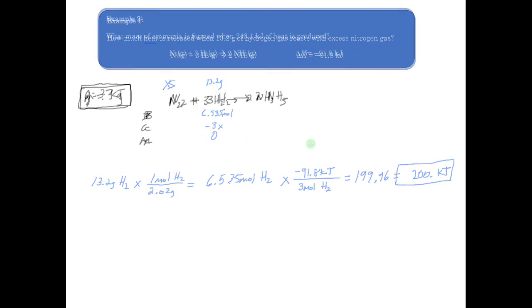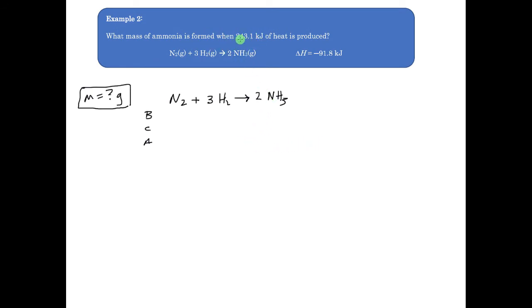In this second example we're doing something a little different. Here they're giving us the amount of heat produced and we're trying to figure out the mass. So this time I'm looking for mass in grams, starting with heat. We have 243.1 kilojoules of heat produced, and we're focusing on the ammonia. We start with zero moles of ammonia since it's being produced as a product. It's kind of going backwards compared to the last problem.